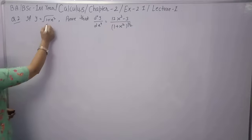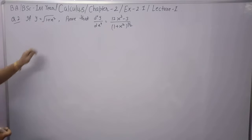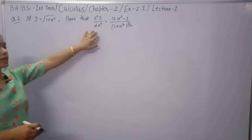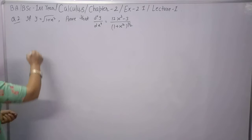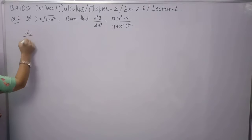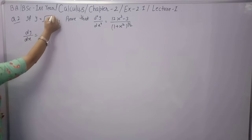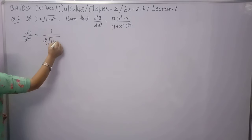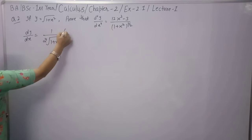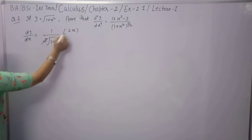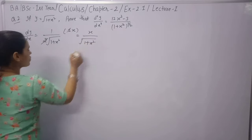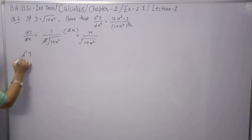Question 2: y = √(1+x²). Prove that the 4th derivative d⁴y/dx⁴ equals a given expression. First, find dy/dx. The derivative of √(1+x²) is (1/(2√(1+x²))) × 2x. The 2's cancel, giving x / √(1+x²).